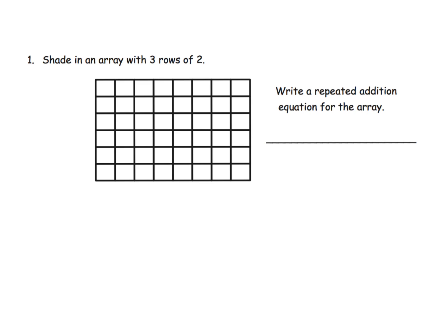Let's get started. The direction says shade in an array with three rows of two. So what is that going to look like? Three rows of two. There's a row of two, and there's a row of two, and there is a row of two. So that is what an array, three rows of two, would look like.